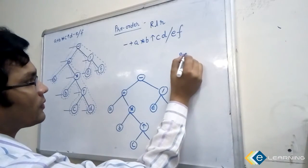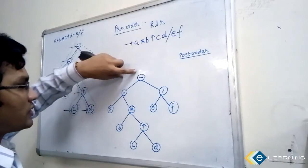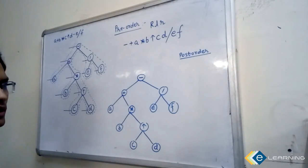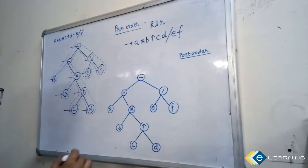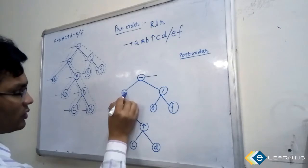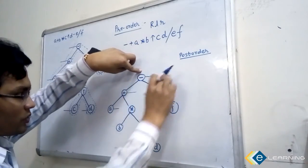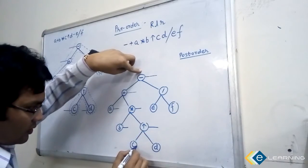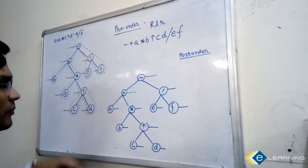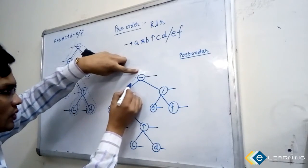Now I want to find the post-order. Post-order has this trick — otherwise there is recursive and non-recursive code, but I'm not discussing those. This is only for competition purposes and you can use this trick. Post-order means just mark a line after the node — that is post. This is the post line. For pre-order the line is before the node; for post-order the line is after the node.